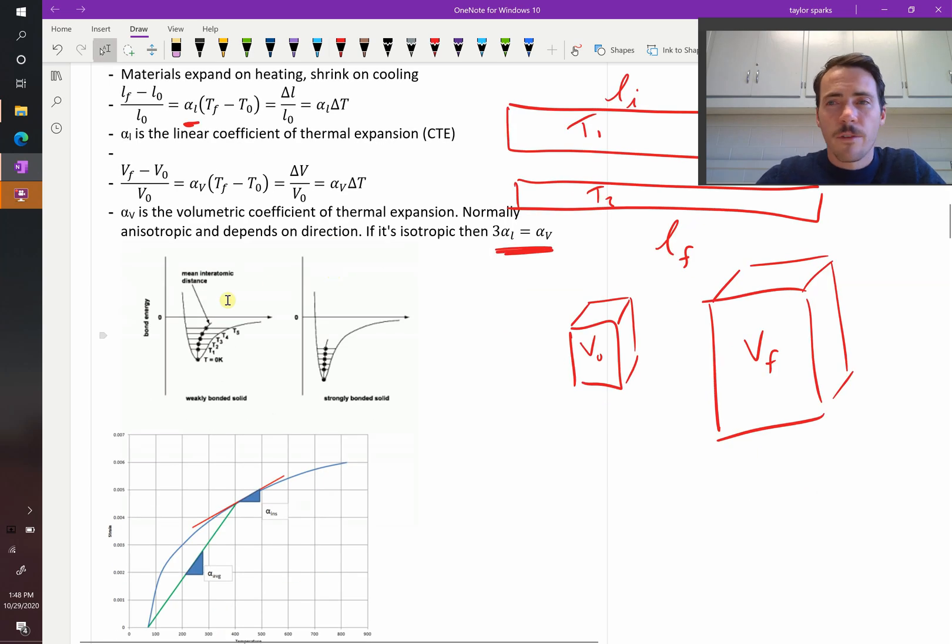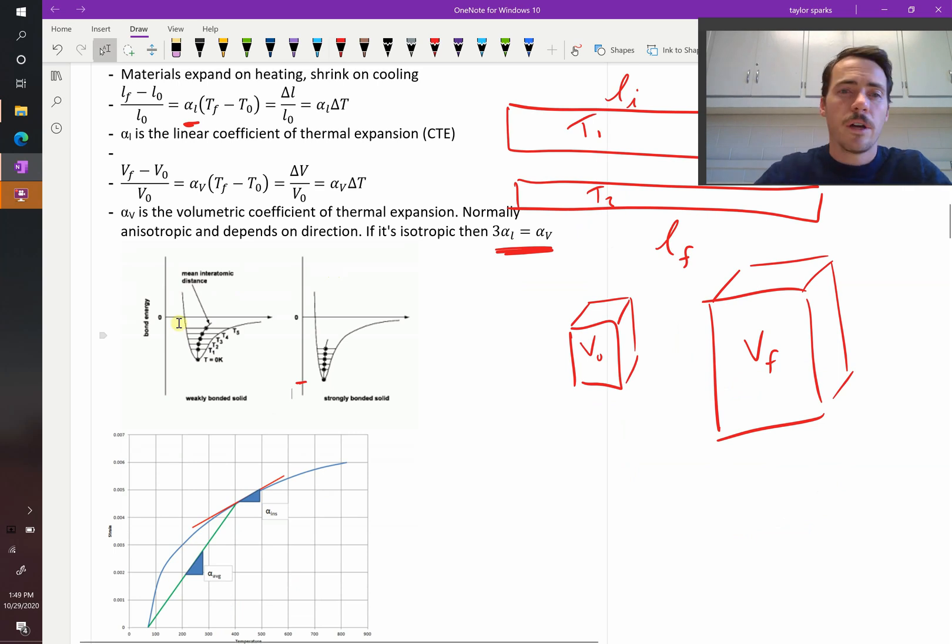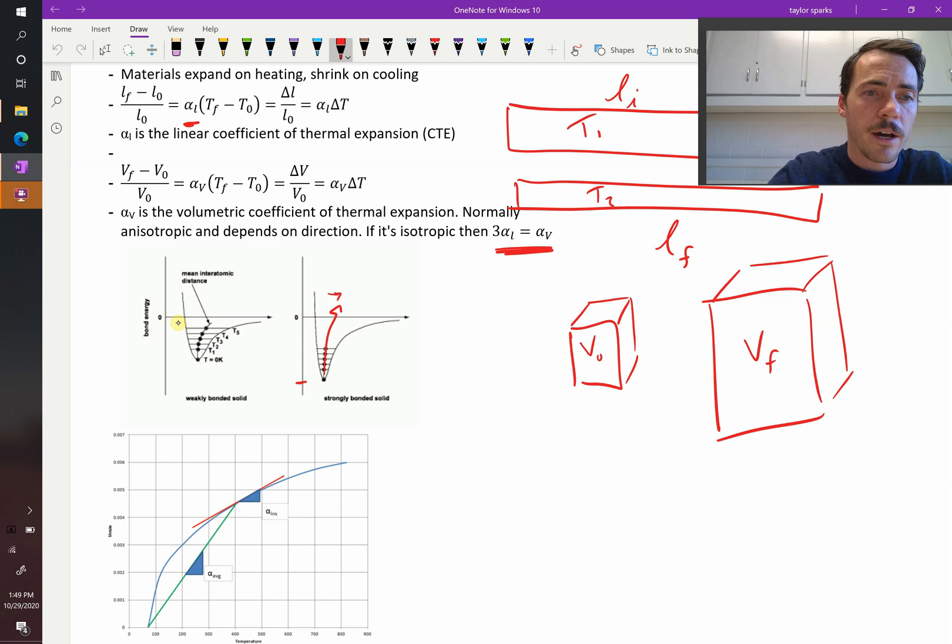We've already talked about the origin of thermal expansion in terms of atomic bonding. The more tightly bound the material is, it has this really low binding energy, so a really large value for binding energy in that it's very negative. Then it tends to produce a symmetric potential energy well. This potential energy well is symmetric. Therefore, as you heat it up, it's not actually moving to the right very much. It's not expanding very much. But if it's weakly bound, then as you heat it up, it bends over quite a bit. Therefore, you get a lot of expansion for the same given temperature change.